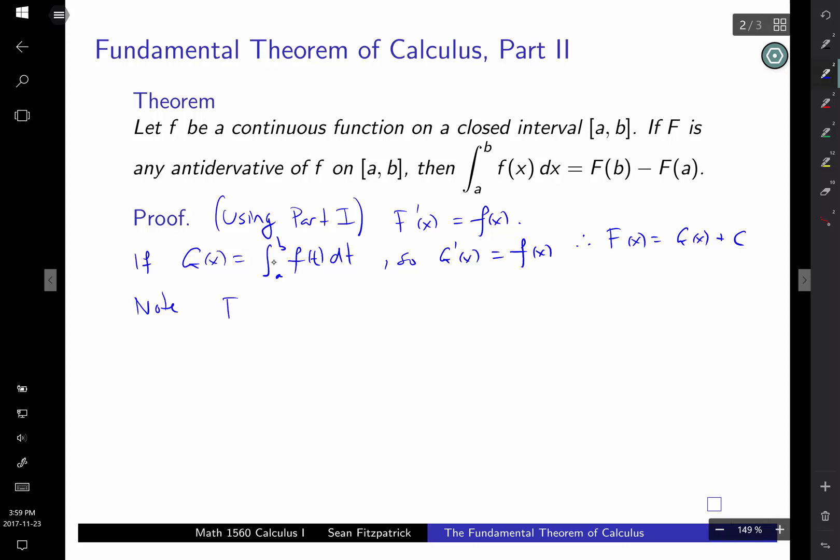We note that f of a would be g of a plus c. But what's g of a? g of a is the integral from a to a. If the two limits are the same, the integral is 0. So, g of a is 0. So, this is c, okay?